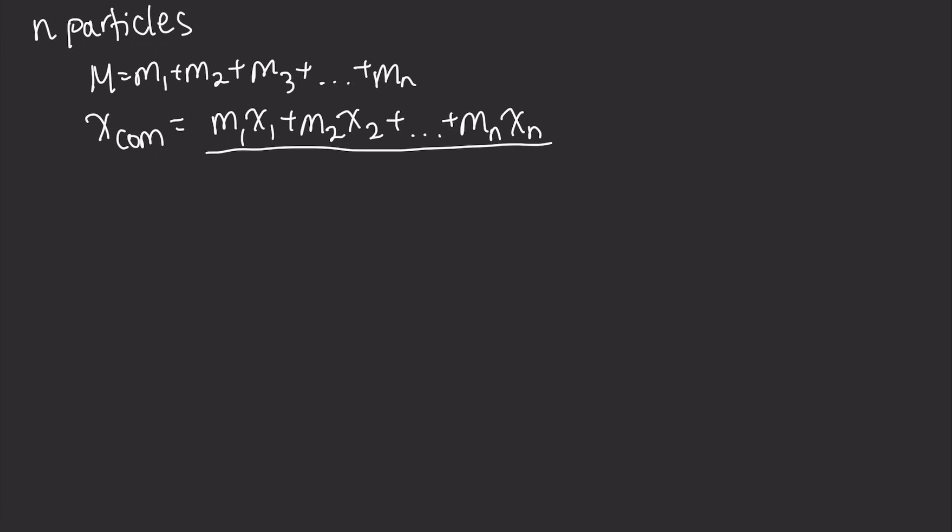And this basically just tells us that the center of mass is equal to 1 over M times the sum of the mass of each particle times the position of each particle. And this is basically simply like a weighted average.